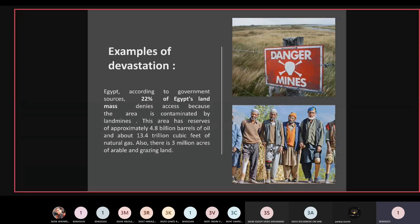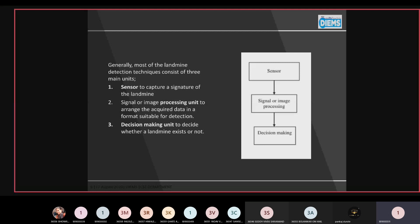Generally, most landmine detection technology consists of three main units. First is the sensor unit, which captures the signature of landmines. Second is the signal and image processing unit to arrange the acquired data from sensors in a format suitable for detection. And third is the decision-making unit to decide whether the landmine exists or not.